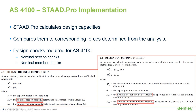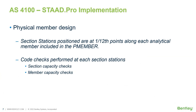For checking the code requirements, STATPRO calculates design capacities and compares them to corresponding axial, bending moment, and shear forces determined from the analysis. For AS4100, two types of design checks need to be performed: the nominal section checks and nominal member checks. In a physical member design, code checks are performed at section stations positioned at 1/12th points along each analytical member included in the physical member. Section capacity checks are carried out for design actions at each station location, and member capacity checks are also carried out for each station.